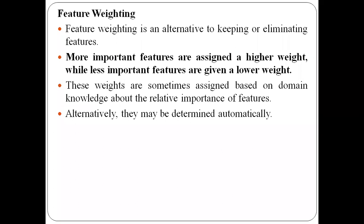So feature weighting is one of the alternative techniques for choosing a subset of features. More important features will be assigned higher weights, and less important features will be assigned lower weights. These weights are assigned by domain experts or automatically by some systems.